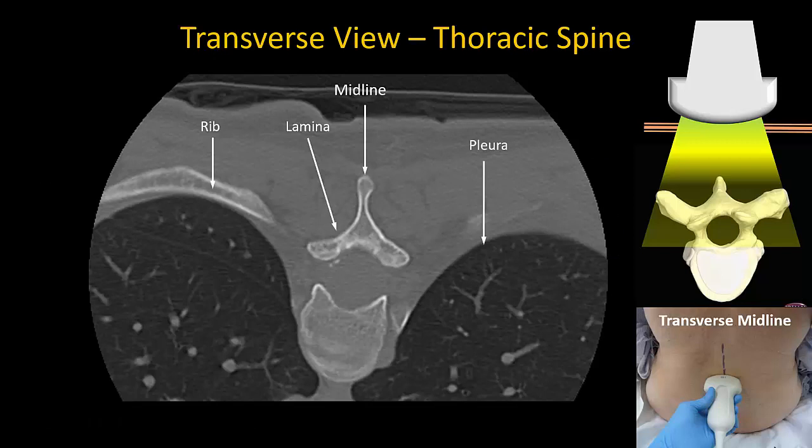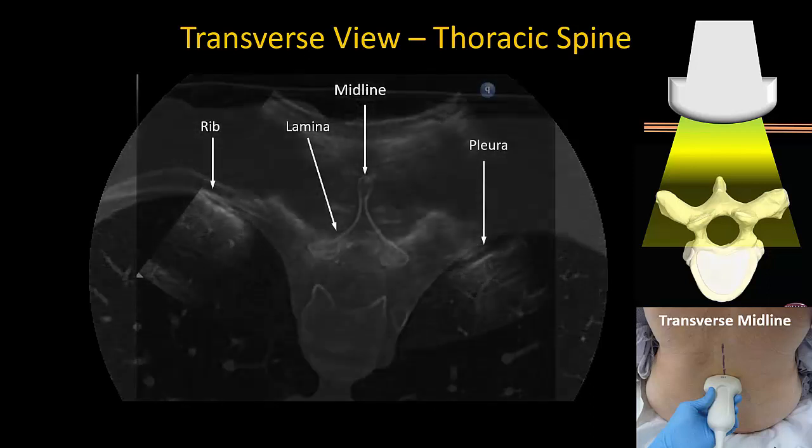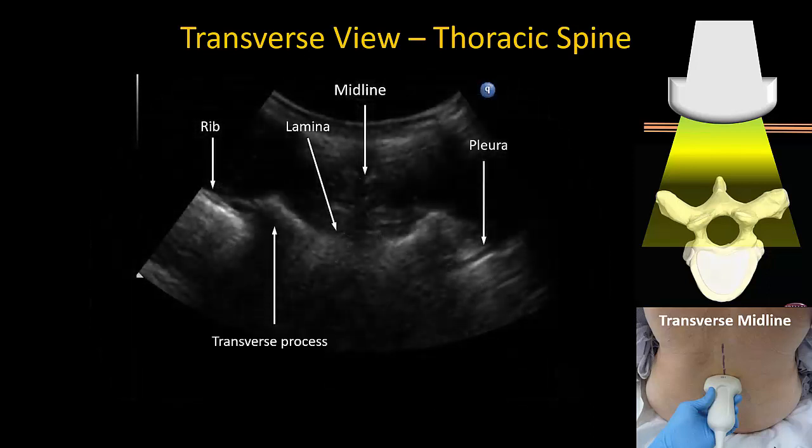These are the structures that would be seen on the transverse ultrasound view: the spinous process, which marks the neuraxial midline; the lamina; the transverse process, which articulates with the rib; and the pleura. Bony surfaces are recognized as bright white echogenic lines with dark acoustic shadowing beneath. The anterior and posterior complexes of the vertebral canal are almost never visible, as there is no interspinous acoustic window in the thoracic spine.